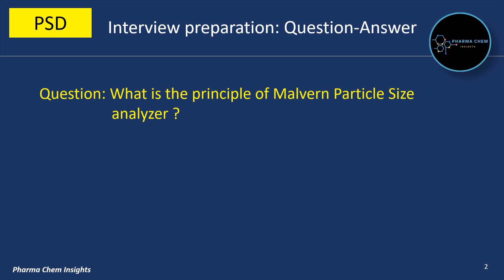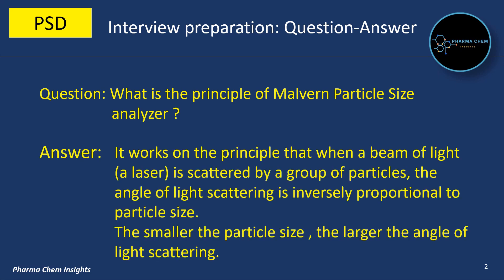First question: what is the principle of Malvern Particle Size Analyzer? It works on the principle that when a beam of light, a laser, is scattered by a group of particles, the angle of light scattering is inversely proportional to the particle size. That is, the smaller the particle size, the larger the angle of light scattering.